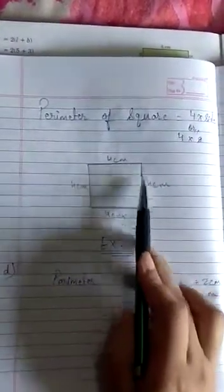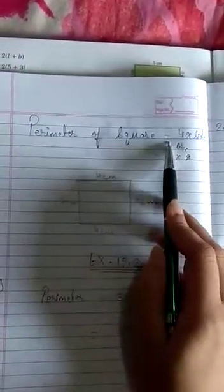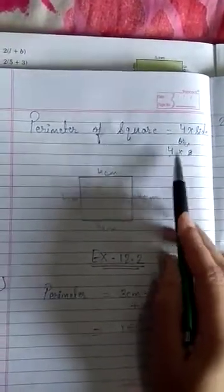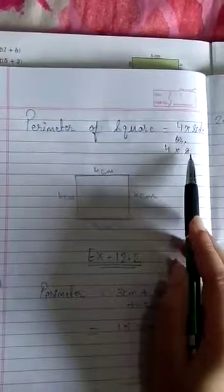Now see perimeter of square. So perimeter of square as you know in square all sides are in equal length. So formula for perimeter of square equals to 4 multiplied by side or we can say that 4 multiplied by s.